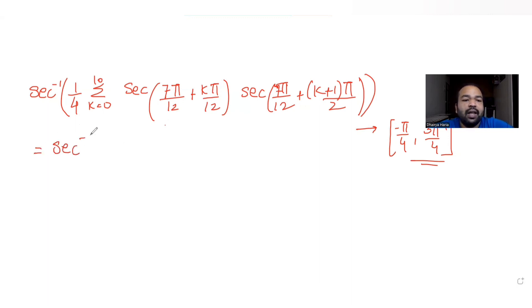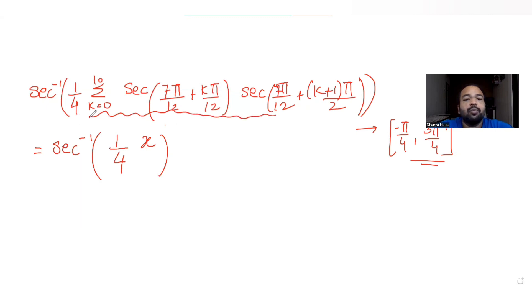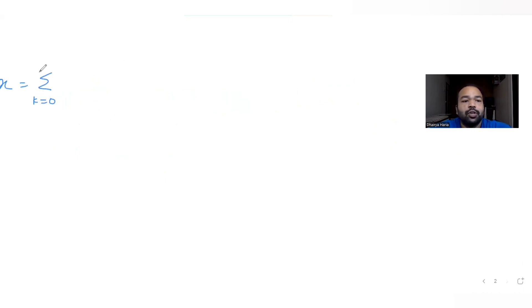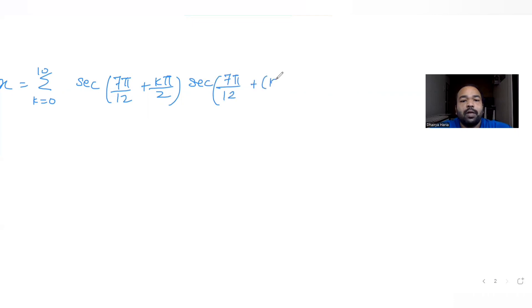First, I'll take this entire summation expression and call it x. So x equals the summation from k=0 to 10 of sec(7π/12 + kπ/2) times sec(7π/12 + (k+1)π/2). We'll find the value of x first, then substitute it back to get the final answer.